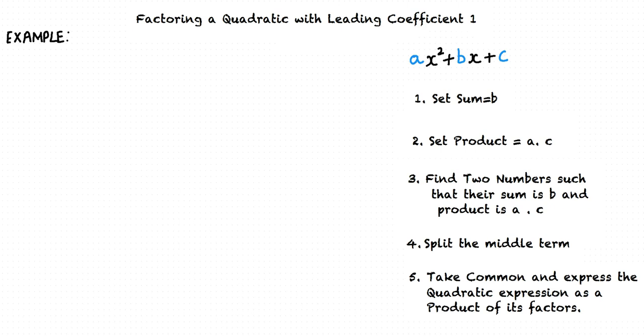Let us consider an example. We are required to determine the factors of the quadratic expression x squared plus 5x plus 6. Here the coefficient of x squared is 1, and hence the leading coefficient is 1. This is a quadratic expression with leading coefficient 1. Let us consider the general form ax squared plus bx plus c.